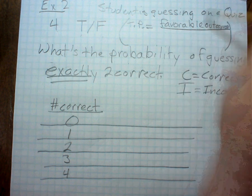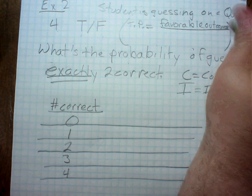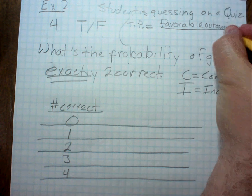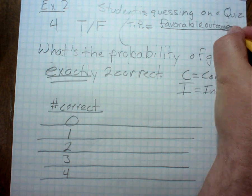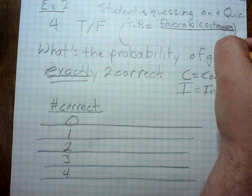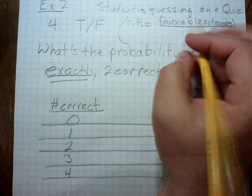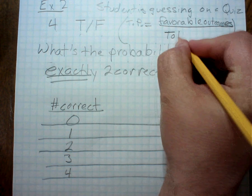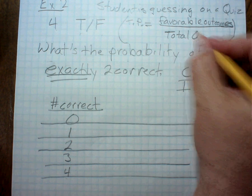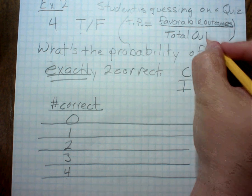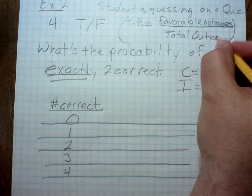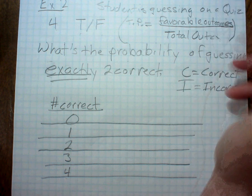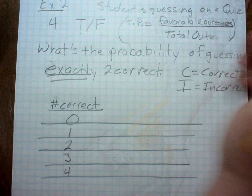...favorable outcomes over the total number of outcomes. So the first thing I've got to do is figure out what the total number of outcomes are, and then figure out the favorable ones.